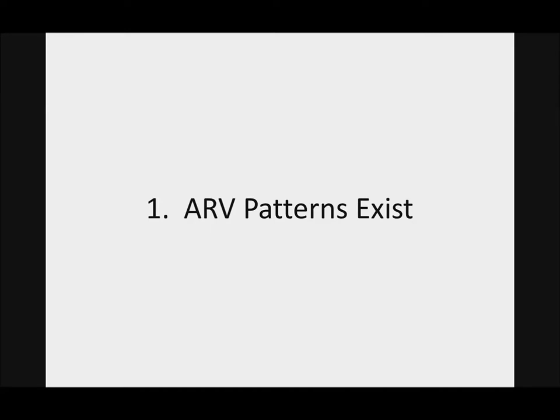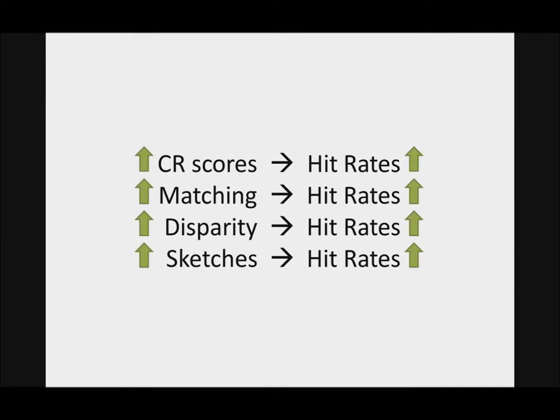So one, ARV patterns exist. What do I mean by that? If you have high CR scores, it's going to lead to high hit rates. If you have a high amount of matching data, it's in general going to lead to high hit rates. If you have a larger disparity, it's going to lead to high hit rates. And if you have better sketches, it's going to lead to high hit rates. And in general, that's usually agreed upon. The opposite is also true. But it doesn't always mean that if you have a low CR score that it's going to be a miss. But in general, there's sort of a pattern to it.